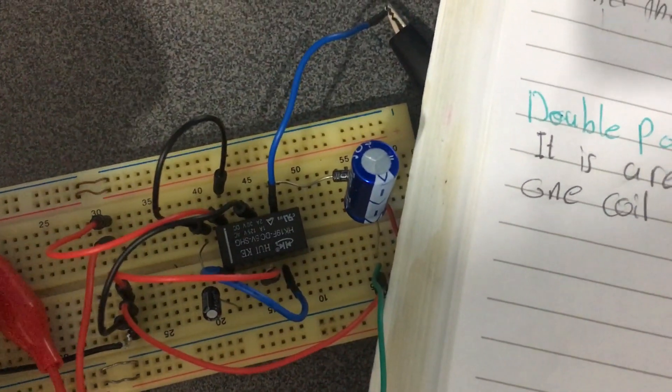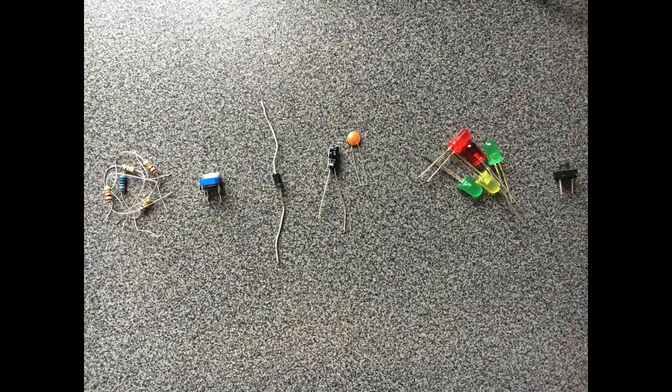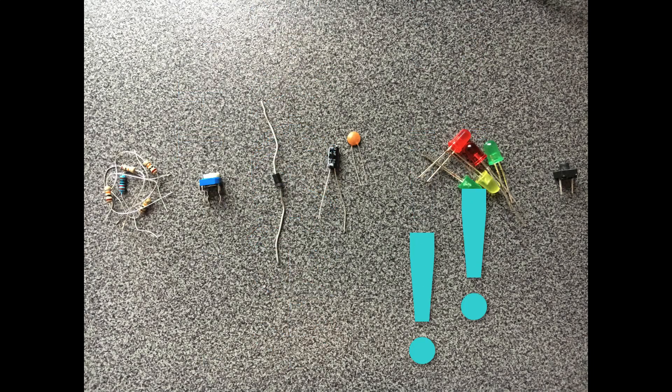If you are like me and cannot afford a commercial variable DC power supply, this video is for you. First of all, the budget of this project is almost $1, since all you need is an LM317 voltage regulator, some resistors, a potentiometer, diode, two capacitors, LEDs, and push button.